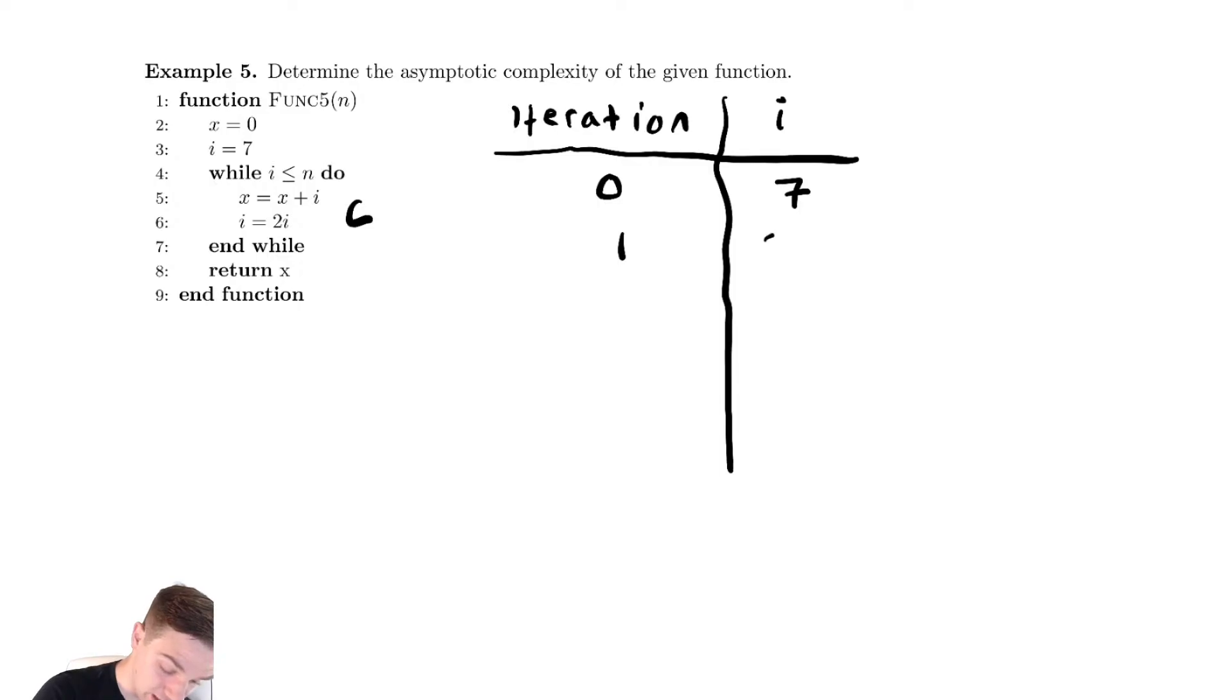It starts at 7, and then we're multiplying that by 2 every time. I'm actually going to do this in a slightly different way than you might. I'm going to write that as 7 times 2, then as 7 times 4, and then after k iterations, it's going to be 7 times 2 to the k.